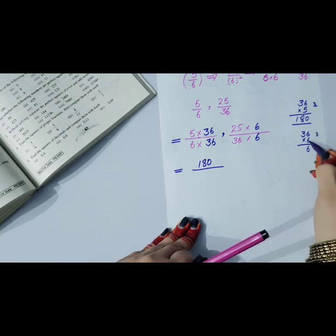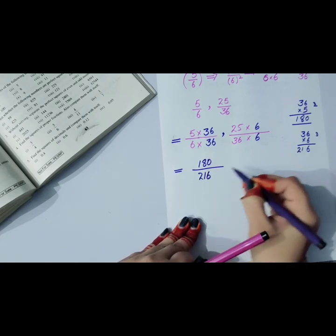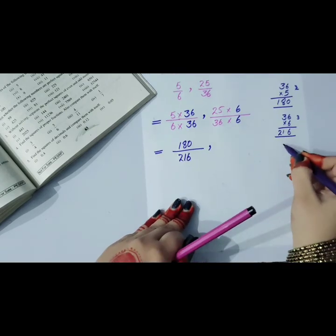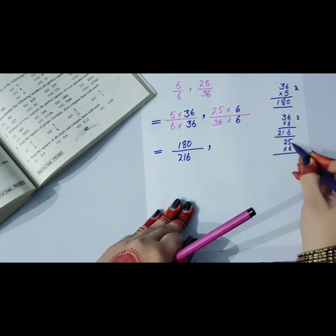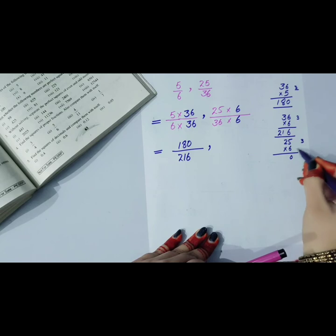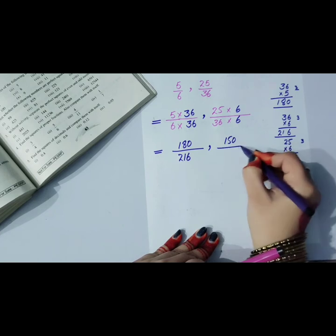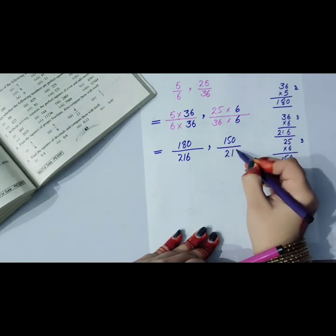For the second fraction: 36 times 6 equals 216, and 25 times 6 equals 150. So we get 180 by 216 and 150 by 216.